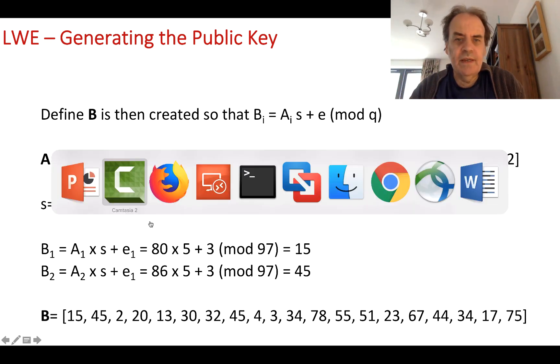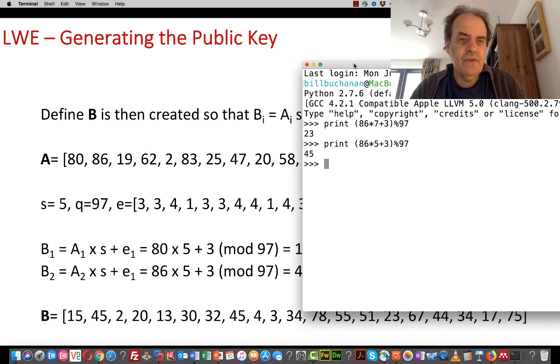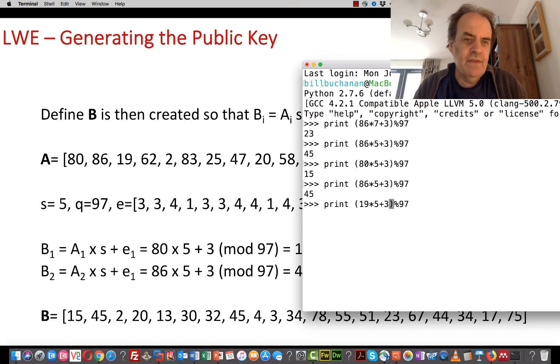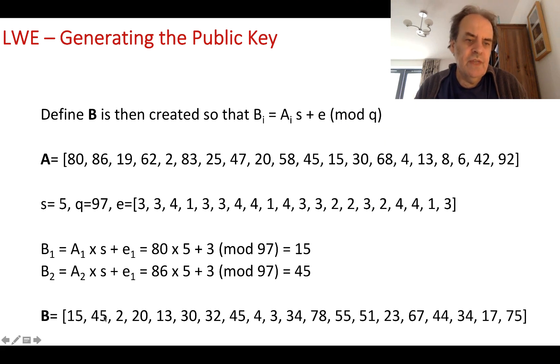Let me demonstrate with Python. We'll print 80 times 5 plus 3 mod 97, which gives us 15. For the next one, 86 times 5 plus 3 mod 97, we get 45. Just to prove it, the next element is 19 times 5 plus 4 mod 97, which is 2. We go through these values, and this gives us B.